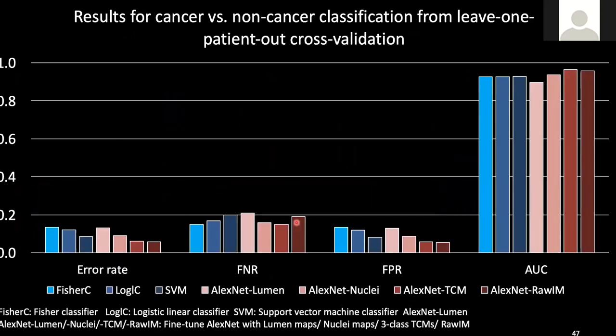Here shows the results for one patient across one station with seven different methods, showing error rate, false negative rate, false positive rate, and AUC. Different color tones represent different methods. The blue tone bars represent conventional machine learning-based approaches, whereas the orange or red tone bars represent deep learning-based approaches. For conventional machine learning we achieved an AUC of 0.92, whereas deep learning achieved better performance. The deep learning fine-tuned by our tissue component map achieved an AUC of 0.97, which is the best performing classifier, followed closely by AlexNet trained by raw image at 0.96.